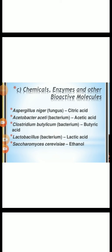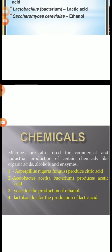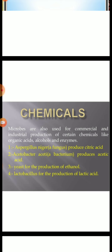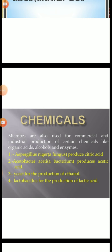Another important use of microbes in industry is the formation of chemicals, enzymes, and bioactive molecules. Microbes are used for commercial and industrial production of certain chemicals like organic acids, alcohol, and enzymes. Acid producers include: Aspergillus niger, a fungus that produces citric acid; Acetobacter aceti, a bacterium that produces acetic acid; Clostridium butylicum, a bacterium that produces butyric acid; and Lactobacillus, a bacterium that produces lactic acid. The yeast Saccharomyces cerevisiae is also used for commercial production of ethanol.